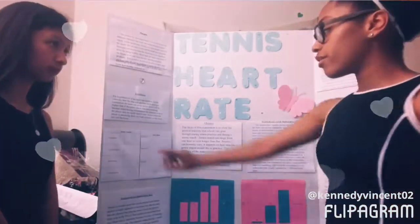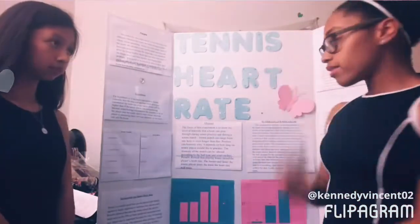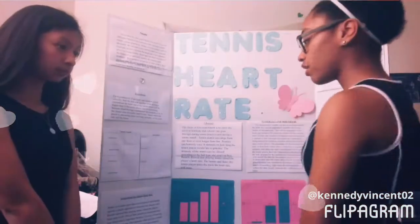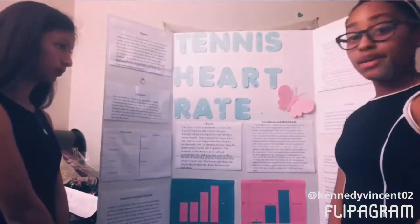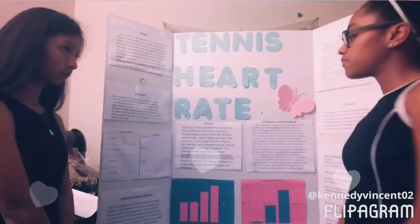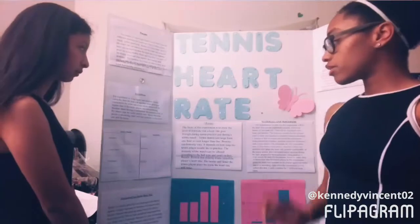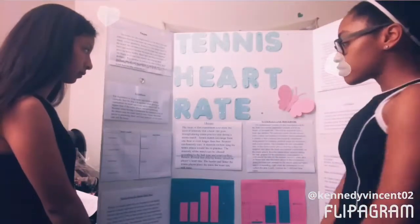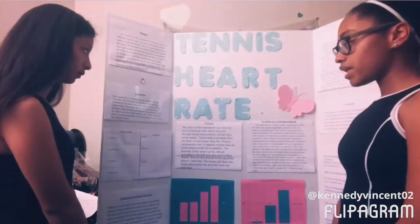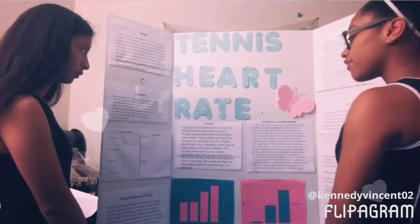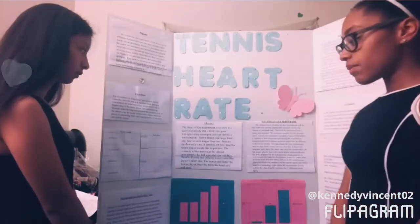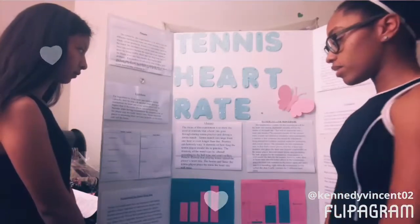Our tables show four trials for practicing. The first practice trial shows 80 for the heart rate, the second one says 81, the third one says 97, and the fourth one says 107. For the tennis match there are three trials. For the first point it was 82 for heart rate, the second point is 107 for heart rate, and the third one is 131 for heart rate.